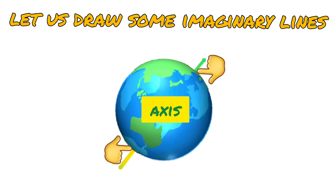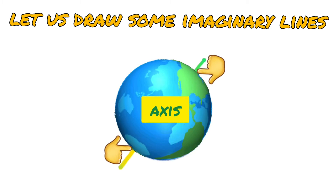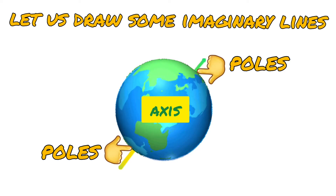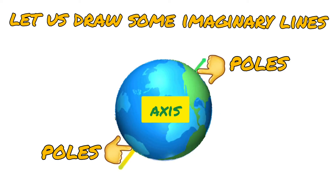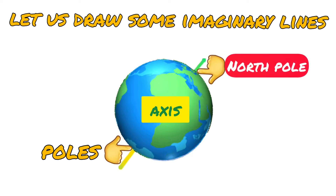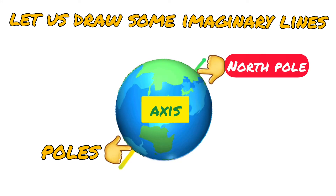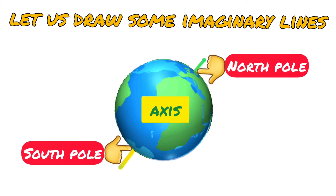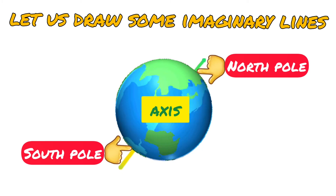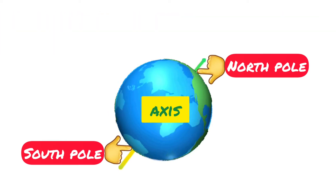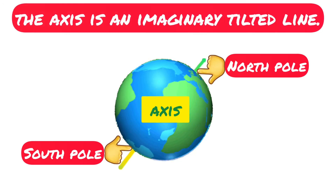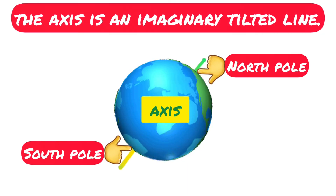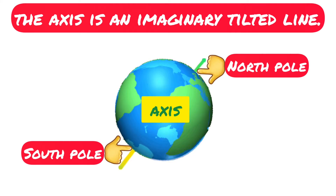The endpoints of the axis of the earth are called the poles. The pole which points towards the pole star is called the north pole. The other is the south pole. The two poles can be used as two fixed points. One thing you need to note is that the axis is an imaginary tilted line — it is not a straight line.